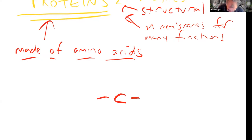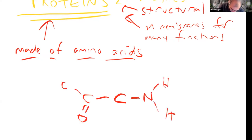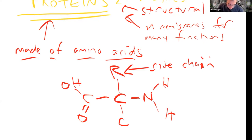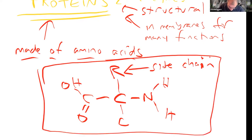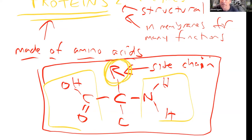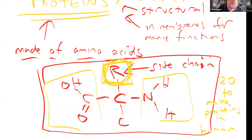To understand proteins, we have to start by understanding what an amino acid is. An amino acid has an amino group on one side and a carboxyl group — which is an acid — on the other. It's called an amino acid because of these two features. The side chain is what makes different amino acids different. In our body there are 20 naturally occurring amino acids used to make up all the different proteins in a human being.